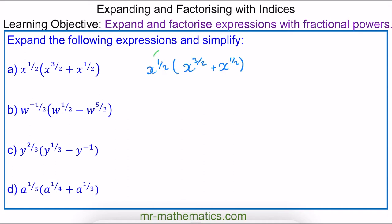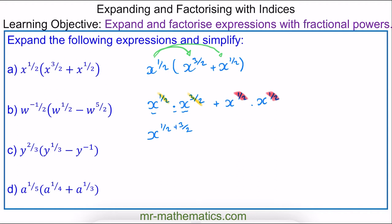We have x to the power of one half multiplied by x to the power of three over two, and this is added to x to the half multiplied by another x to the half. To simplify this expression, because the bases are the same and I am multiplying them, I can add the two powers: one half add three over two, and the same to the next set, which is one half add another one half.